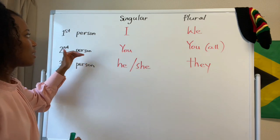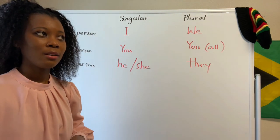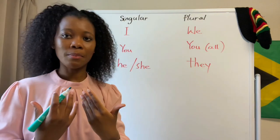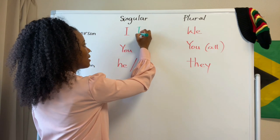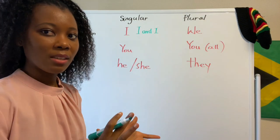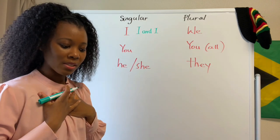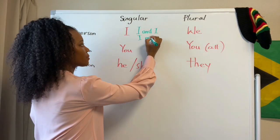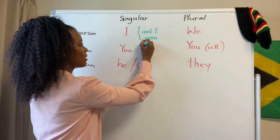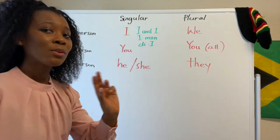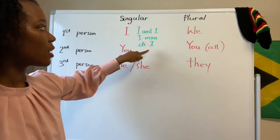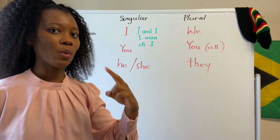For the first person singular in the Iyaric language, or Rastafarian speech, we have 'I and I.' One of the ways they refer to themselves is 'I and I,' or 'Iman,' or 'The I.' These are three ways they refer to themselves in the first person singular: I and I, Iman, or The I.